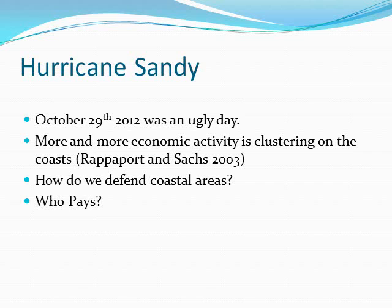October 29th was an ugly day and the Northeast is still digging out. In a well-known paper by Jordan Rappaport and Jeff Sachs in the Journal of Economic Growth, they documented that more and more Americans and more economic activity is clustering on the coasts of the United States — on the East Coast and the West Coast. In a world of sea level rise, and I take climate change quite seriously, ongoing natural disasters such as hurricanes and floods may be exacerbated by climate change, and we're putting more people and more economic assets in harm's way.